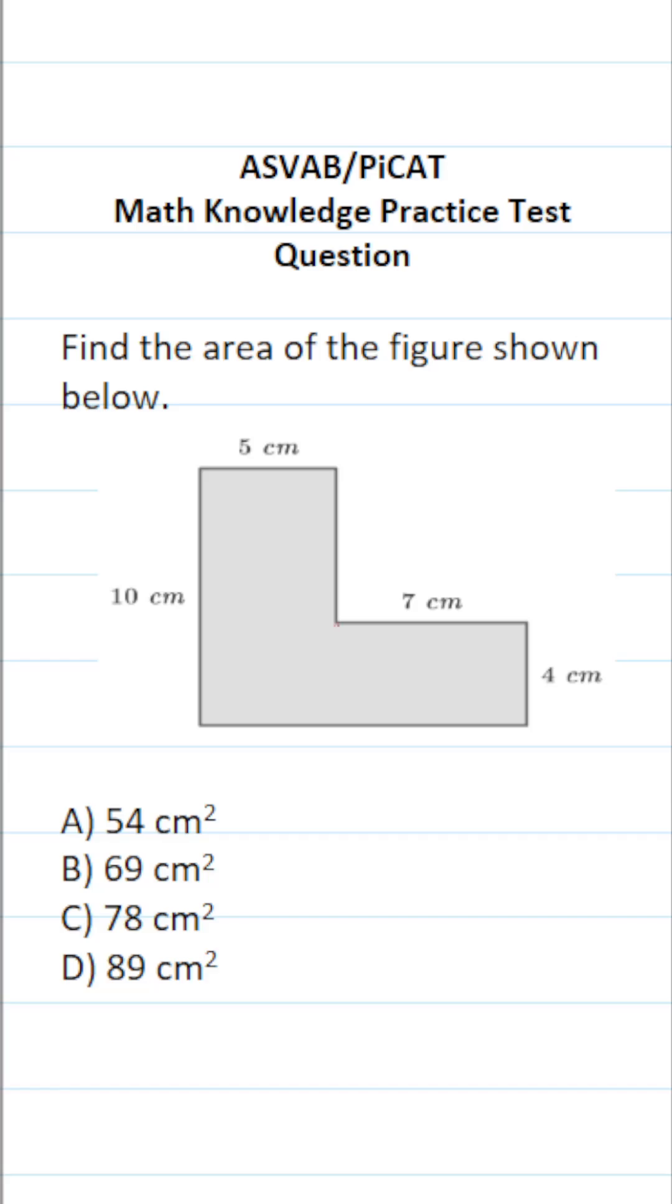So in this case, if I were to take a pair of scissors and cut this composite figure apart right here, you can see that I would have one rectangle here and a second rectangle here. In other words, this composite figure is a combination of two smaller rectangles.